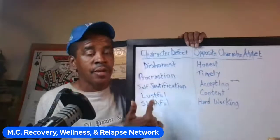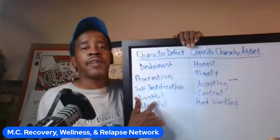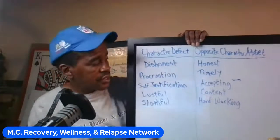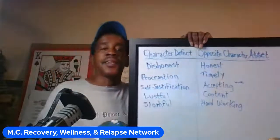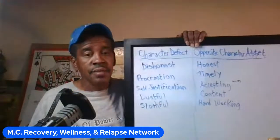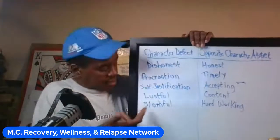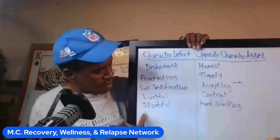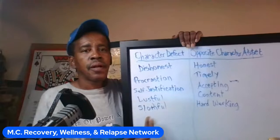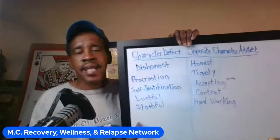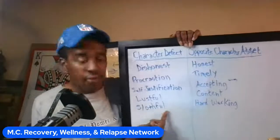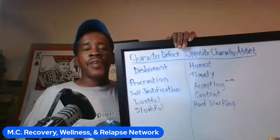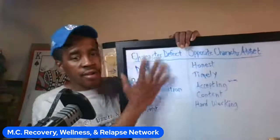A lot of people suffer from or have an association with lustfulness — whether it's over people, places, things, or situations. The opposite of that is to be content. Lustfulness is one of the seven deadly sins, and it's really close to greed, which is also a character defect — never having enough. And then slothful: taking shortcuts, thinking there's an easier and softer way of doing things instead of putting in the hard work. That reveals your character defects.